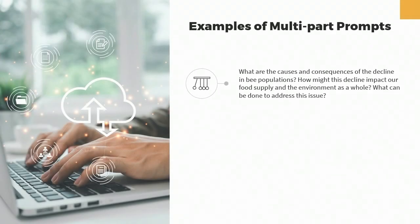Prompt Example 1: What are the causes and consequences of the decline in bee populations? How might this decline impact our food supply and the environment as a whole? What can be done to address this issue? This prompt consists of multiple questions that address different aspects of the topic and encourages us to consider different angles and explore potential solutions to the problem.